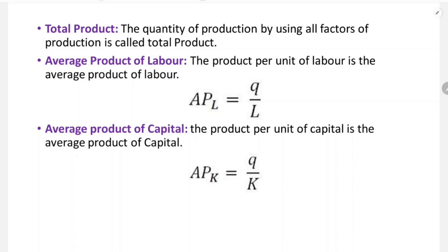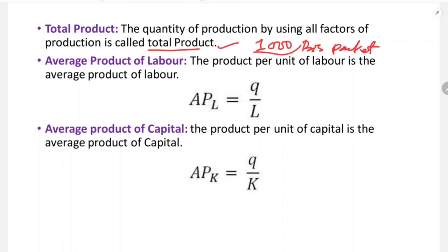The next concept is total product. The quantity of output produced by using all factors of production is called total product. For example, 1,000 biscuit packets produced using all the raw materials — that output is the total product.